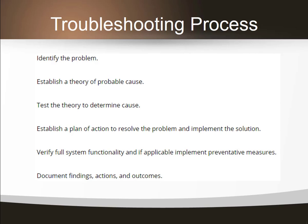Step six involves any preventive measures that need to be put in place — whether informing or educating the customer, or taking action such as installing a UPS if the root problem was caused by a power issue with no surge protection. And lastly, once you've done that, you need to document the findings, your actions, and the outcomes. We need to document, document, document in the IT world.